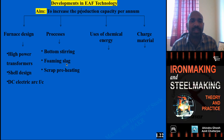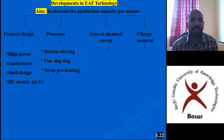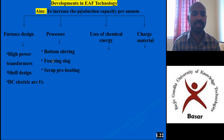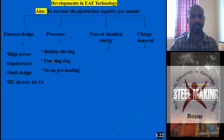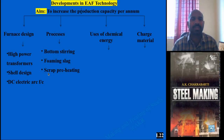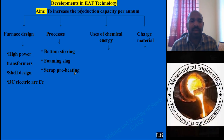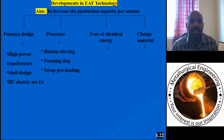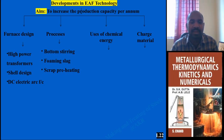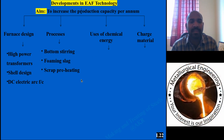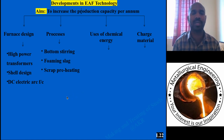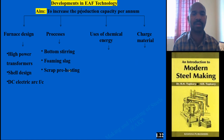If foaming slag is allowed to form, it will protect the electrode and protect from reoxidation from the atmosphere. Another process is scrap preheating — instead of using steel scrap as it is, if you preheat it, the temperature may change around 40 to 50 degrees Celsius. This is advantageous: moisture gets removed, energy consumption is reduced, and tap-to-tap time is reduced.